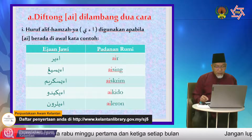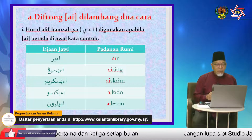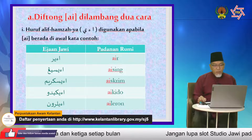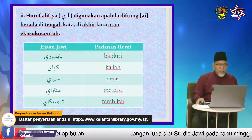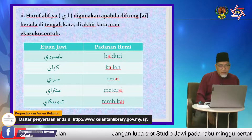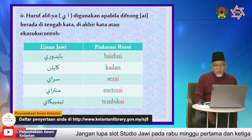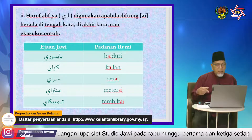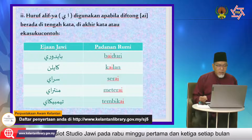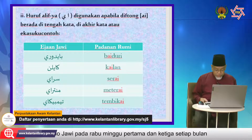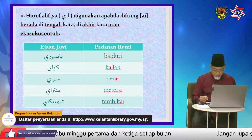Perkataan 'aileron': ejaan Jawi alif, hamzah, ya, lam, ra, wau, nun — padanan rumi A-I-L-E-R-O-N, aileron. Itulah padanan di antara ejaan yang ada alif dengan hamzah-ya di tengah, membezakan di antara dua vokal. Kita beralih kepada cara bunyi AI yang kedua.